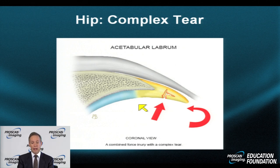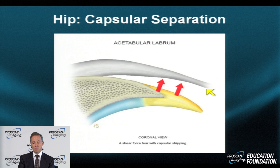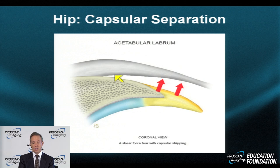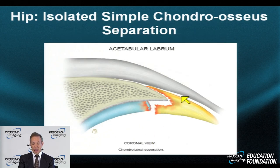Then there is the menisco-capsular — or labrocapsular — separation, where the capsule is displaced away from the acetabulum and labrum for a distance more than three or four millimeters, often associated with extensive soft tissue swelling around it. Concomitant labral tears are often present with this type of capsular separation.